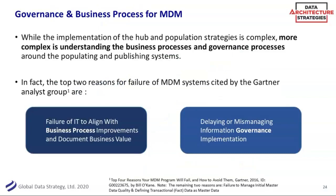A Gartner report backs up what I've been saying: yes, technology is important and complicated in MDM, but technology is only a piece of the puzzle. When they looked at the top reasons for failing MDM systems, it was business failure to align with business process and not having the right data governance in place. That resonates with my practice as the hardest thing to get right. When master data sings well, it's a huge success — but the successes generally started with a good governance group in place first and a good architecture in place.